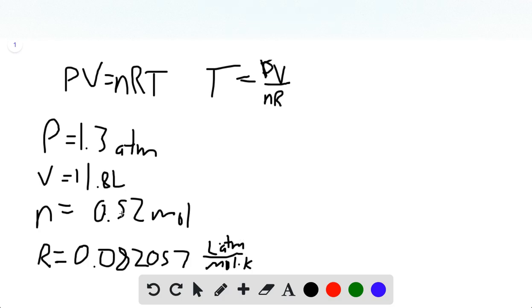And so we have atmospheres, liters, moles. Those will cancel with the liters, atmospheres, and moles in the R value, and we'll end up with just degrees Kelvin.